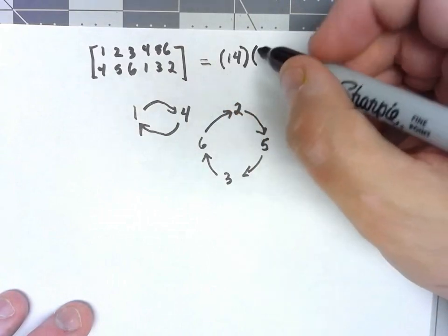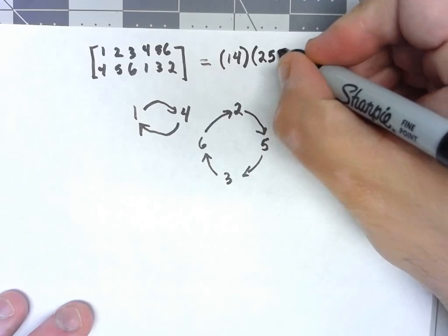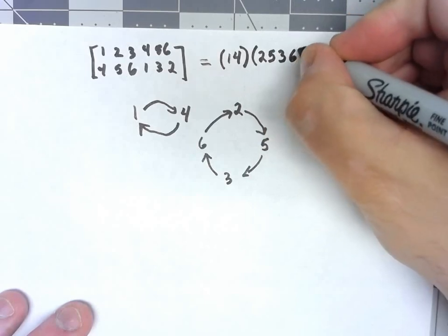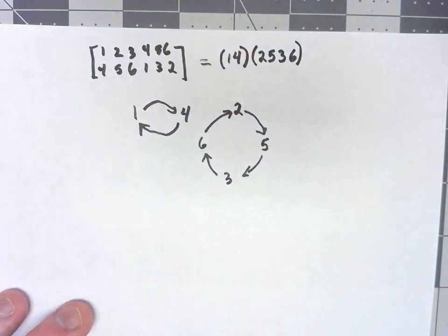Because these cycles kind of wrap around, I can say this one, 2 goes to 5, goes to 3, goes to 6, 6 wraps back around to 2, so I close off that cycle.